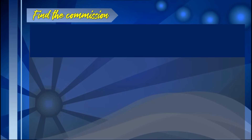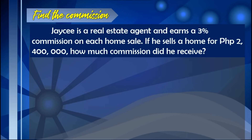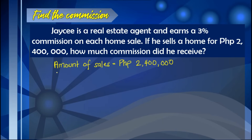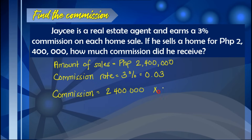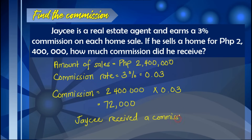Example 1 — Find the commission. JC is a real estate agent and earns a 3% commission on each home sale. If he sells a home for $2.4 million, how much commission did he receive? The amount of sales is $2.4 million and the commission rate is 3%, or 0.03. Multiplying these two values gives a commission of $72,000. JC received a commission of $72,000 for selling a home worth $2.4 million.